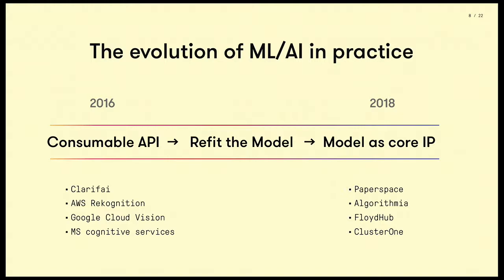Then a few years later, everyone thought we could just refit models to existing pre-trained models. But just like the generic API, your problem statement will always differ from the intent of the original model, and the tradeoff is of course a lower level of accuracy. Because of this dilemma, this has not proven to be a viable strategy.